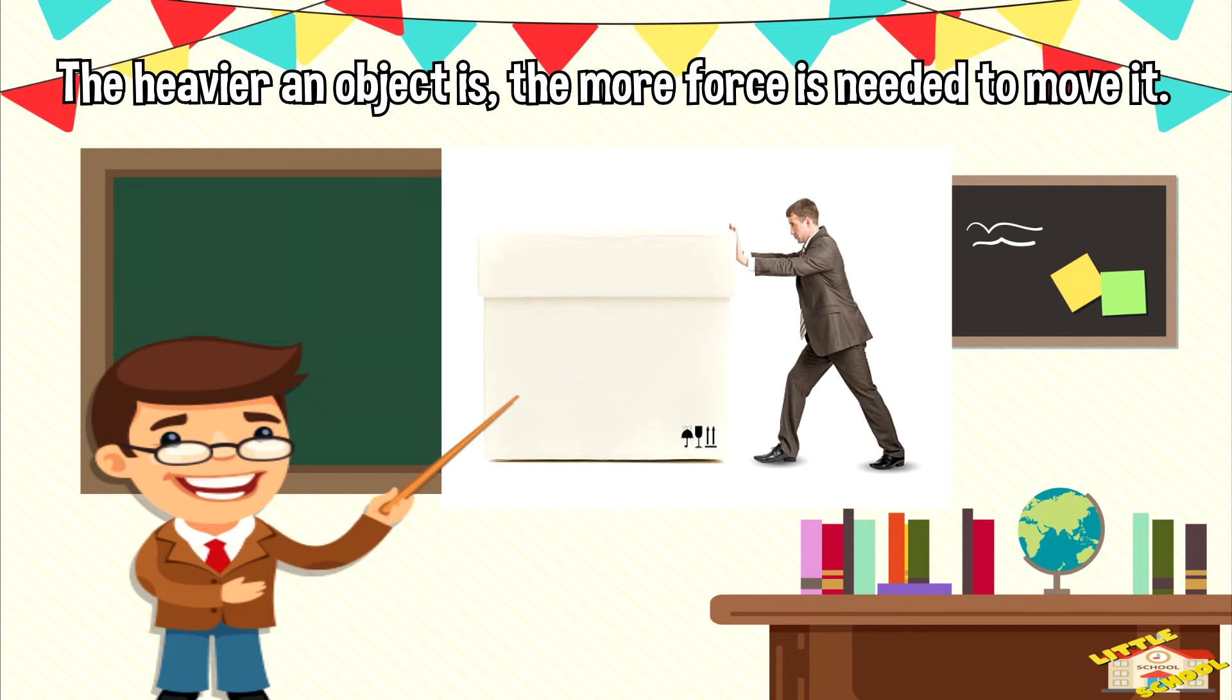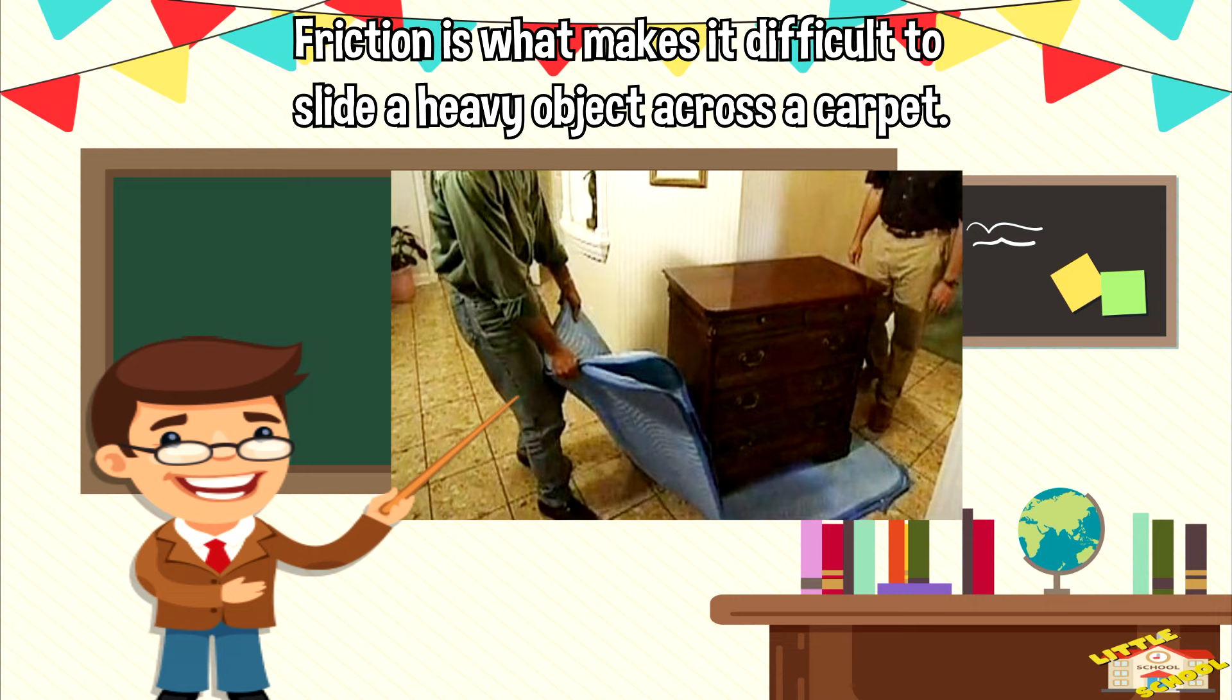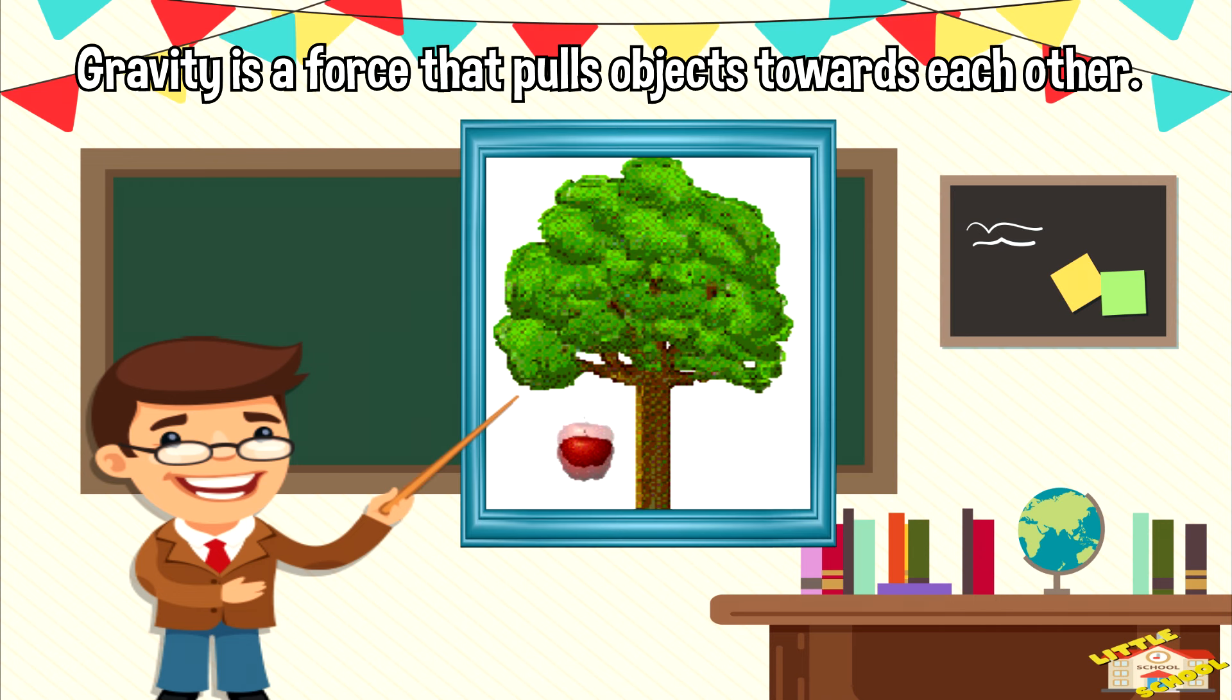The heavier an object is, the more force is needed to move it. Friction is the force that resists motion when two surfaces are rubbing against each other. For example, friction is what makes it difficult to slide a heavy object across the carpet.